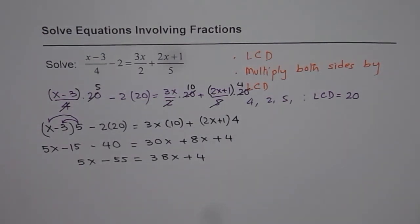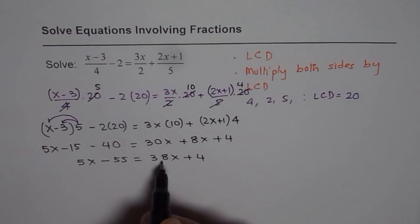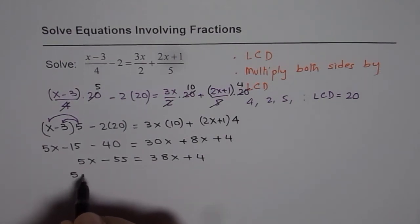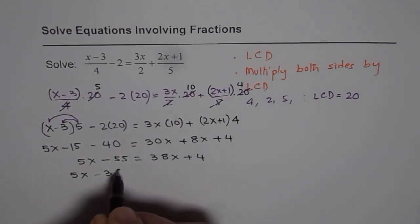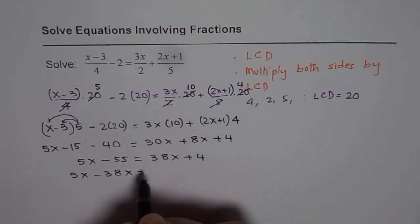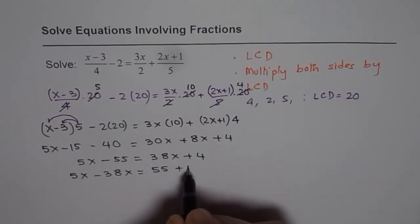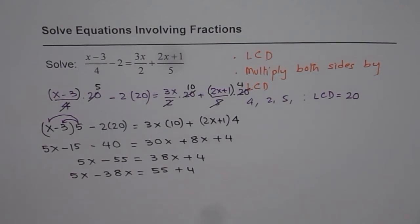Now we can bring the like terms on one side. So if I bring 38x here I get 5x minus 38x, equals to minus 55 on the right side with plus sign becomes 55 plus 4.